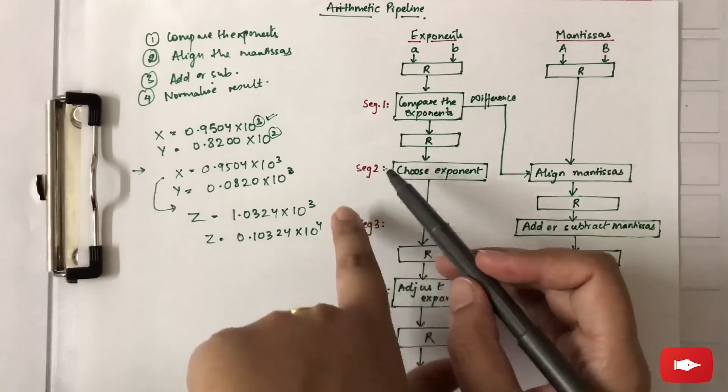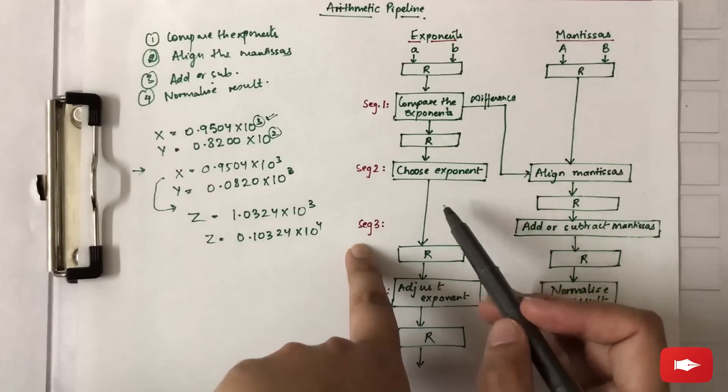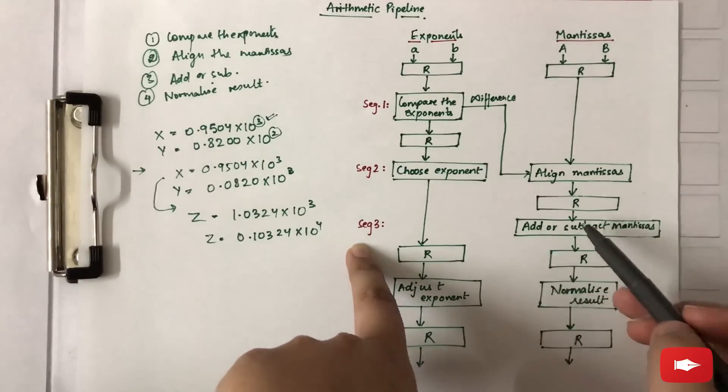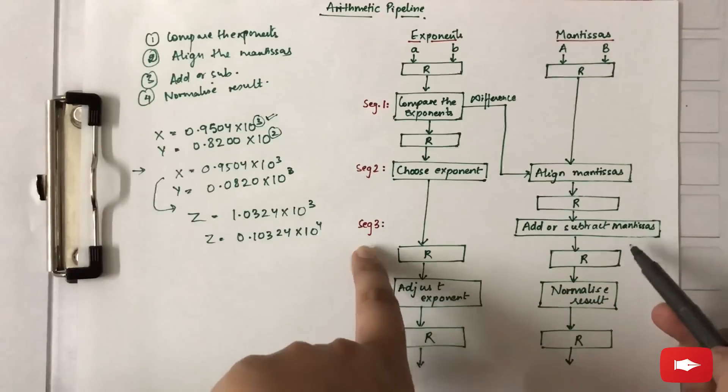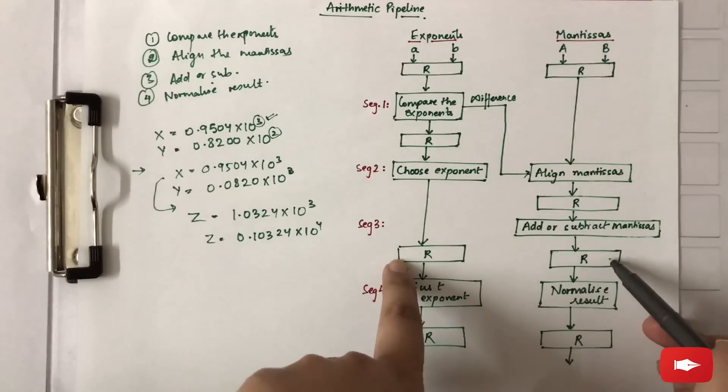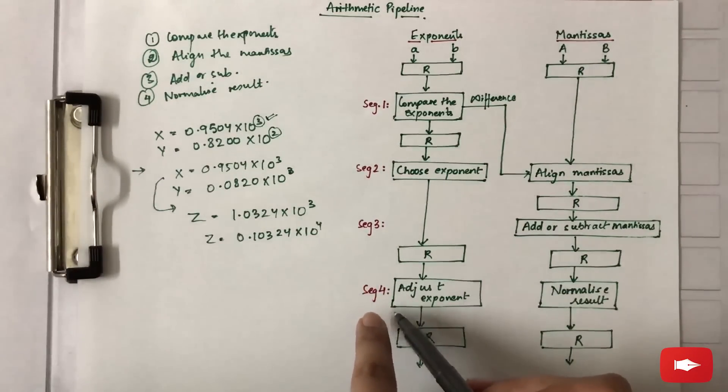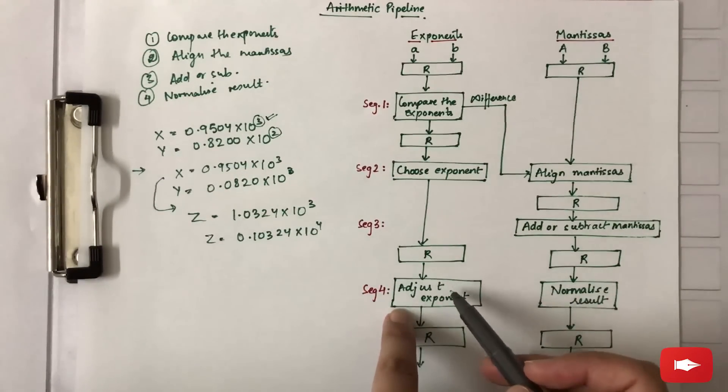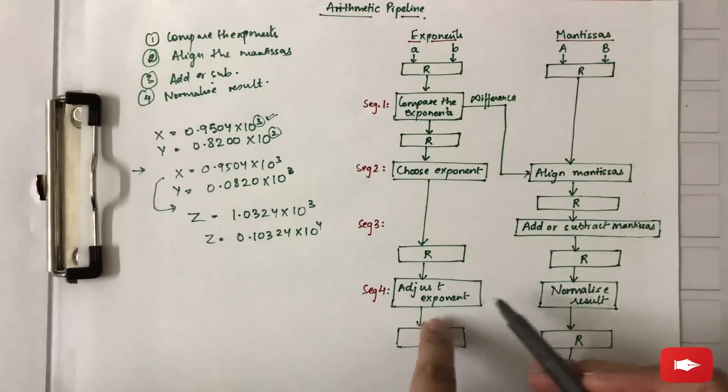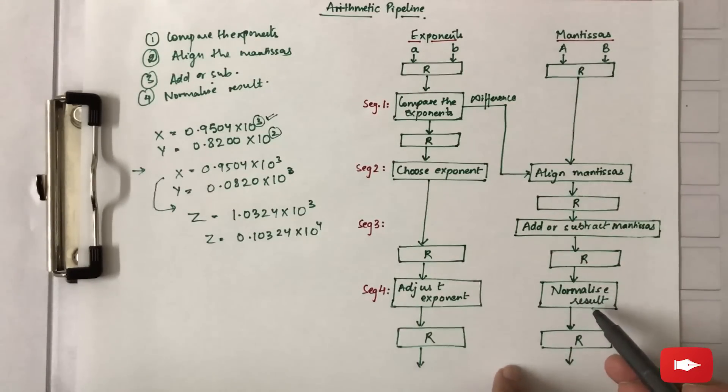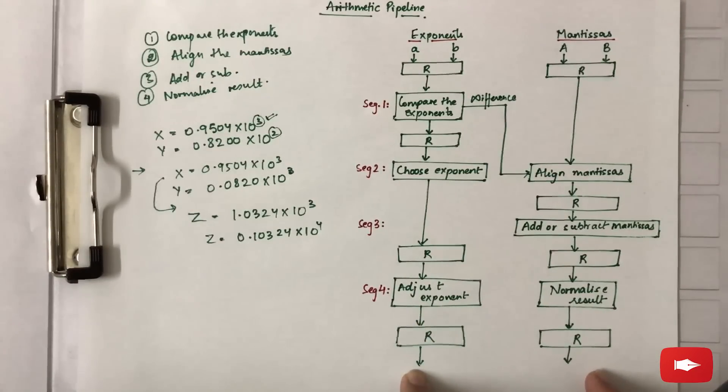In segment 3, we need not do anything to the exponents, but we add or subtract the mantissas and store the result in registers. Then in the fourth segment, we adjust the exponent and normalize the result, and again the results are stored in registers.